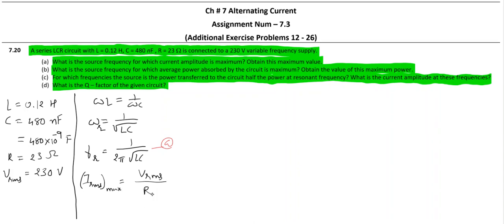R square plus X_L minus X_C whole square. But we are talking about resonance, so at resonance X_L equals X_C, the two are equal, they negate each other, and hence mod Z becomes equal to R. So I_rms maximum is V_rms by R.